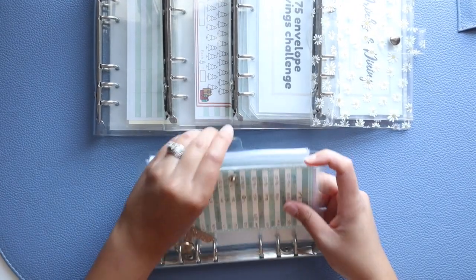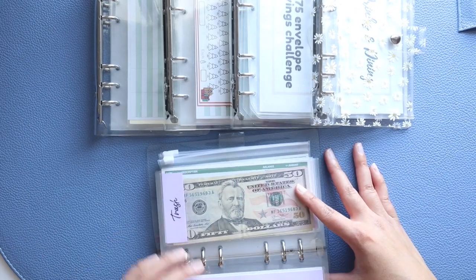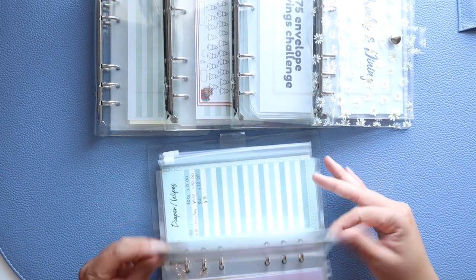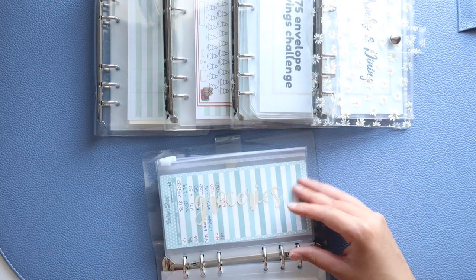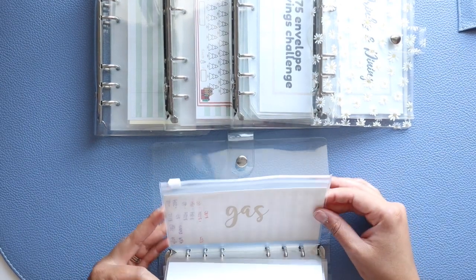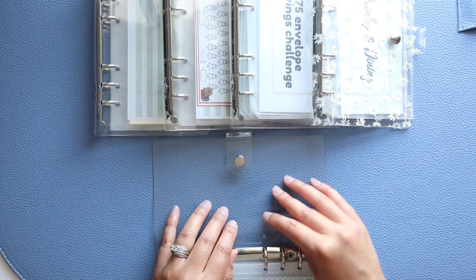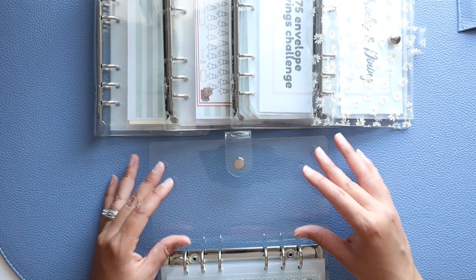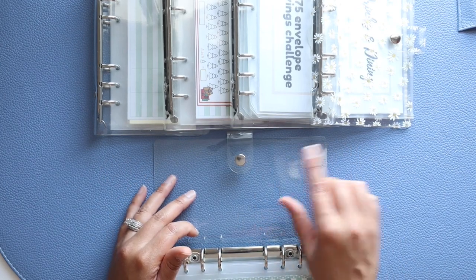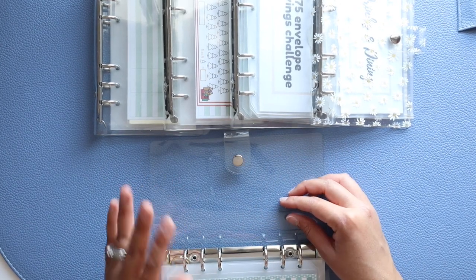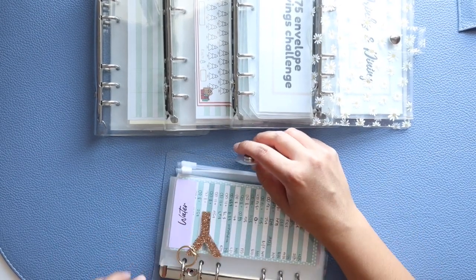We're going to be keeping water, sewer, trash where it's at. Toiletries is staying. Diapers, wipes, dog food is staying. Parking is staying. Groceries is staying and gas is staying. I'm going to be adding one more category here, and that's my Navy Federal credit card. I'm going to add that on here once I remove some of the categories in the other ones. So high priority is pretty much staying the same.